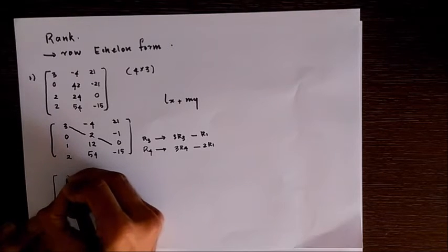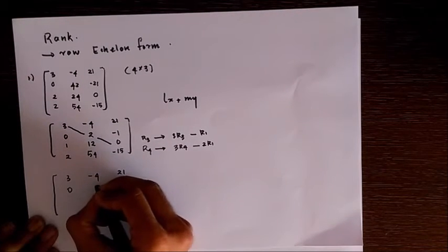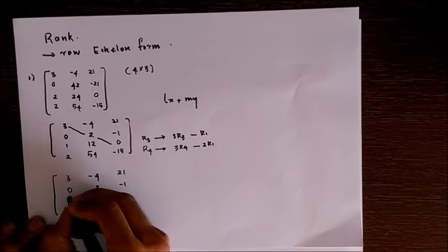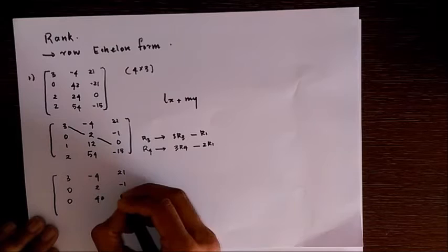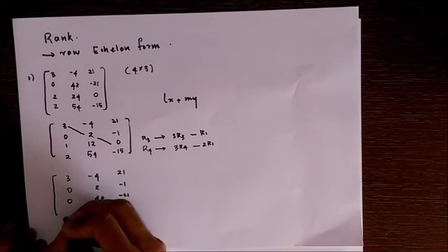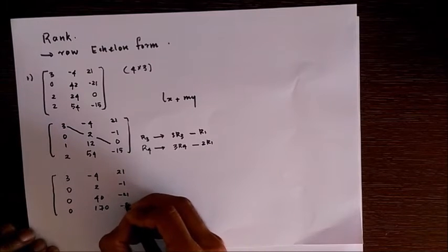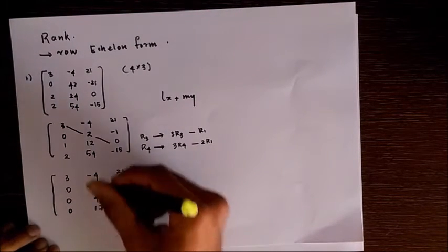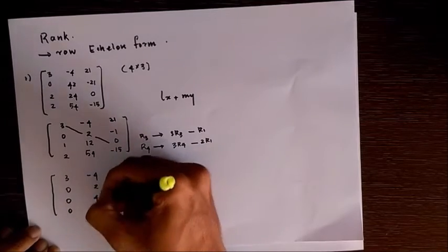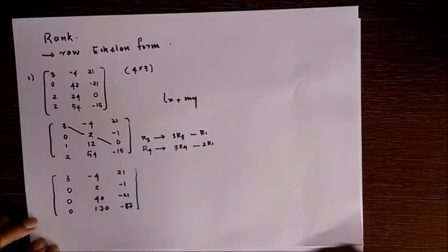...yield us with the matrix like this: 3, 2, minus 1, and 0, 40, minus 21, 0, 17, 0, and 0, minus 87. Here in this matrix, we again have 2 common in this column. It's not necessary, but for simplicity I am transforming it into a simpler matrix.